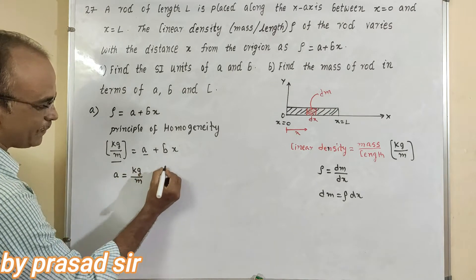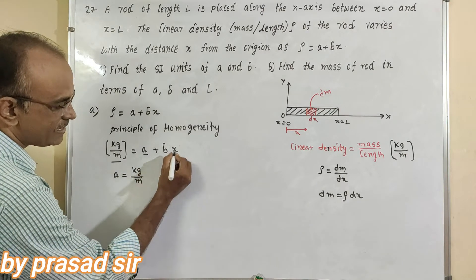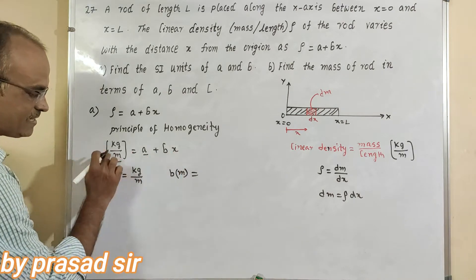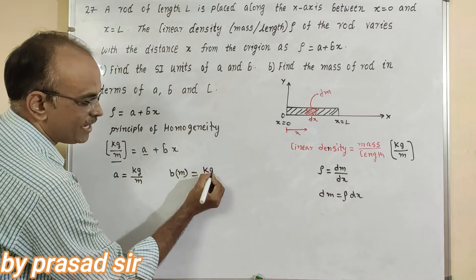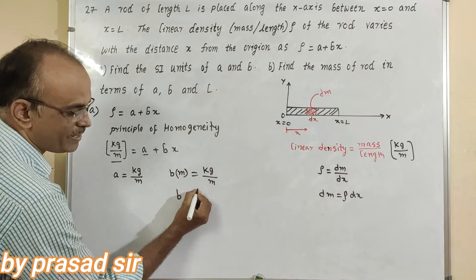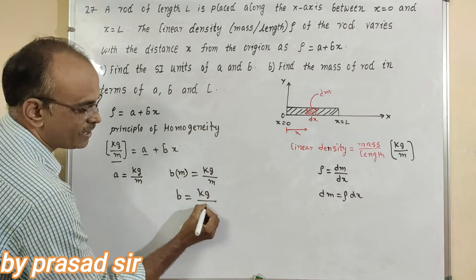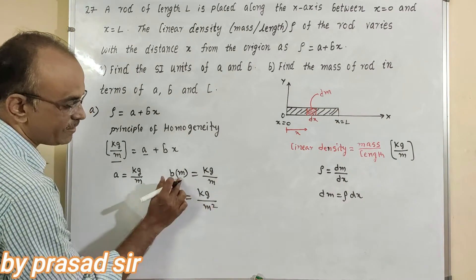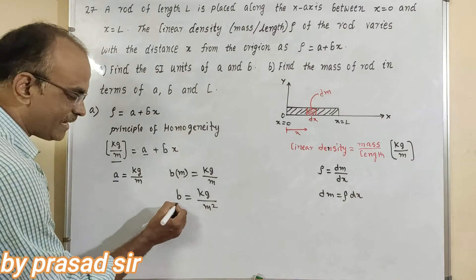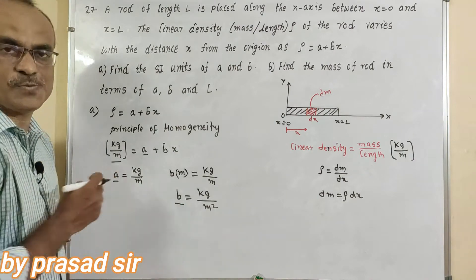Now here I will take B. Bx expressed in terms of meters, that is the distance, and here kilogram by meter. Now the SI unit of B is equal to kilogram by meter square. So here SI unit of A and SI unit of B are this one.